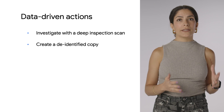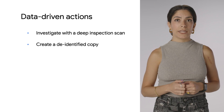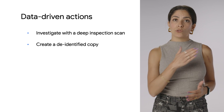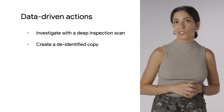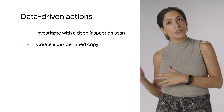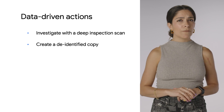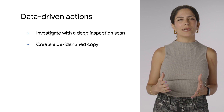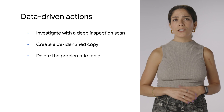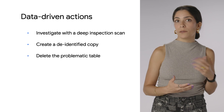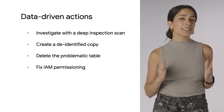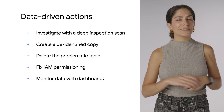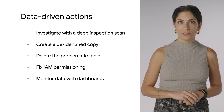You can create a de-identified copy of your data based on what Auto DLP found and use those copies in your business operations instead of the original tables. This obfuscates the values of PII while maintaining the raw data. You can also delete the problematic table, fix IAM permissioning, or monitor data use through dashboards.